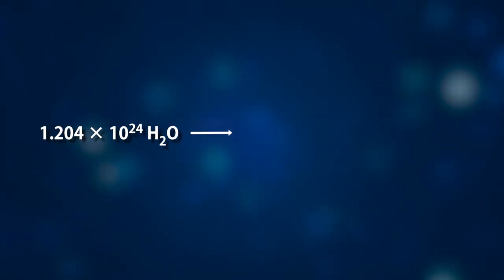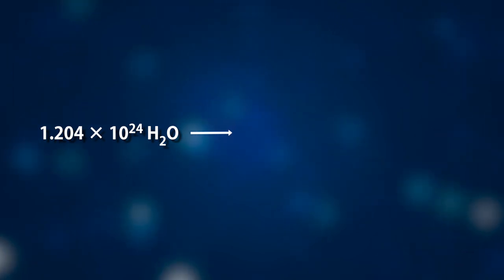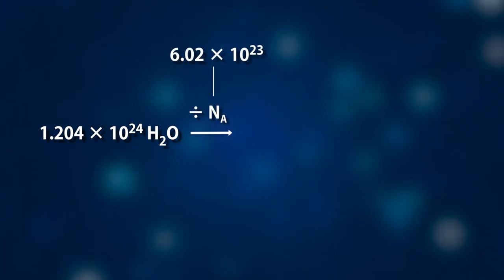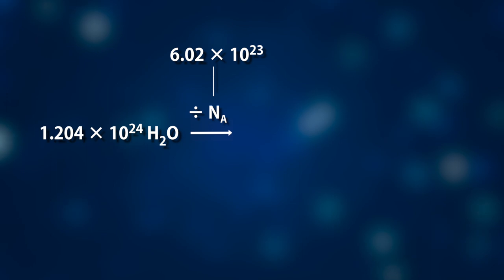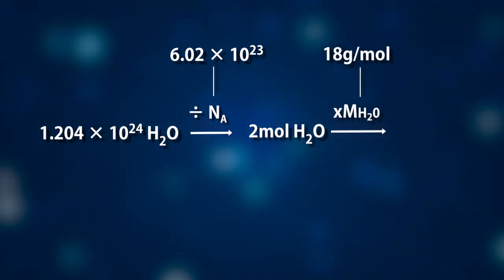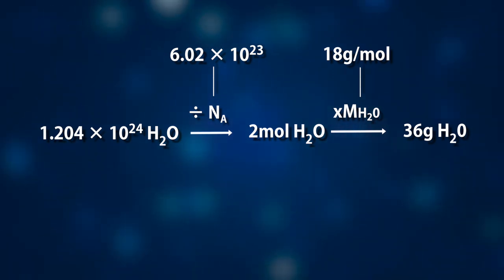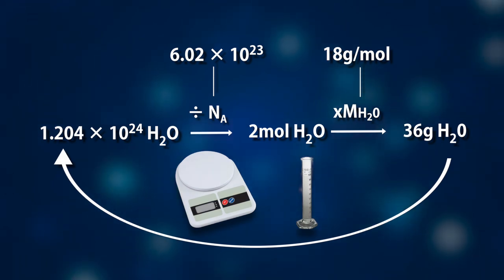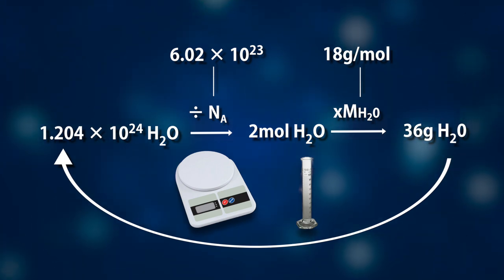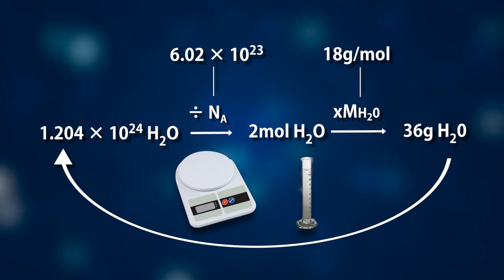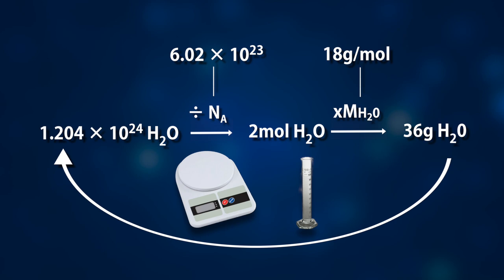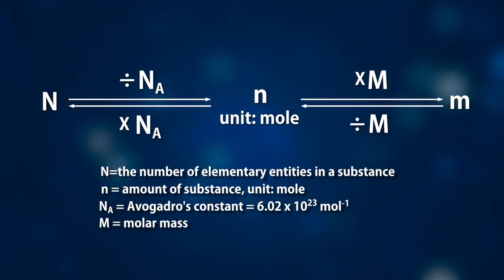Welcome back. Did you get the answer? According to what we have learned: first, we convert 1.204 times 10 to the 24th water molecules to its amount of substance using the first conversion factor Nₐ, which gives 2 mol. Then, using the second conversion factor — the molar mass of water, which is 18 grams per mol — we convert 2 mol of water to 36 grams. By Avogadro's constant and molar mass, we can count the invisible 1.204 times 10 to the 24th water molecules just by measuring 36 grams of water, just as we counted 10,000 beans.